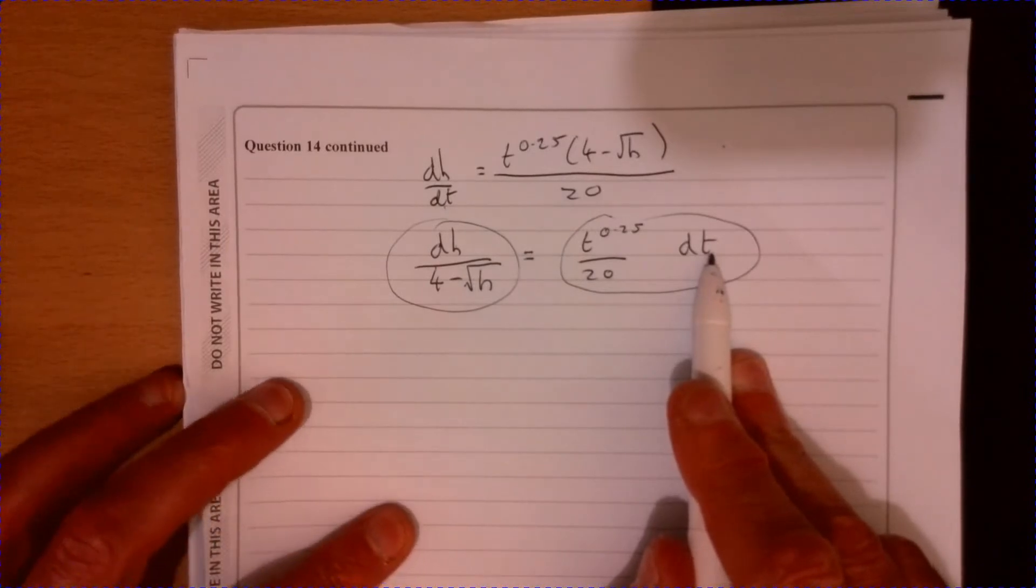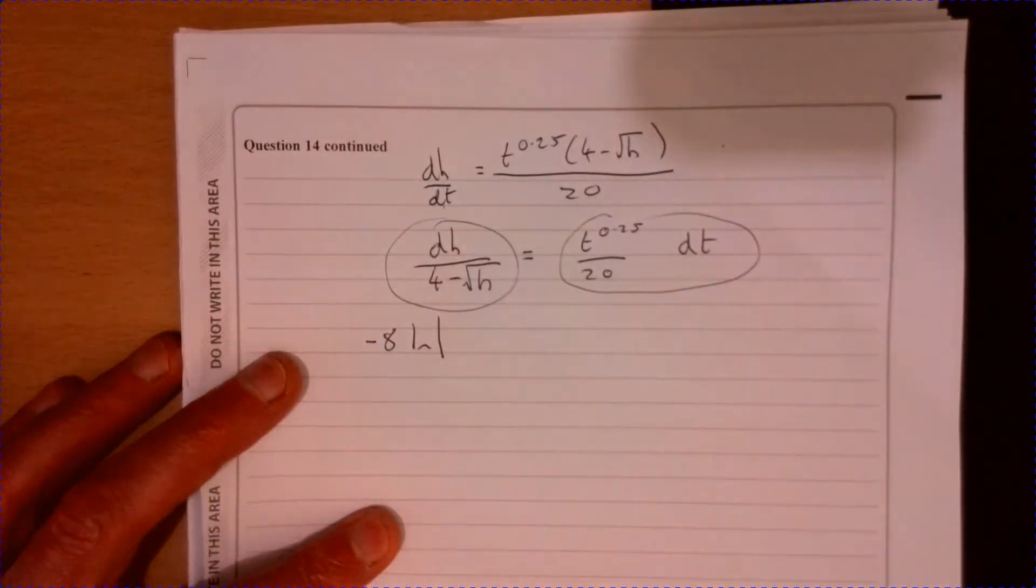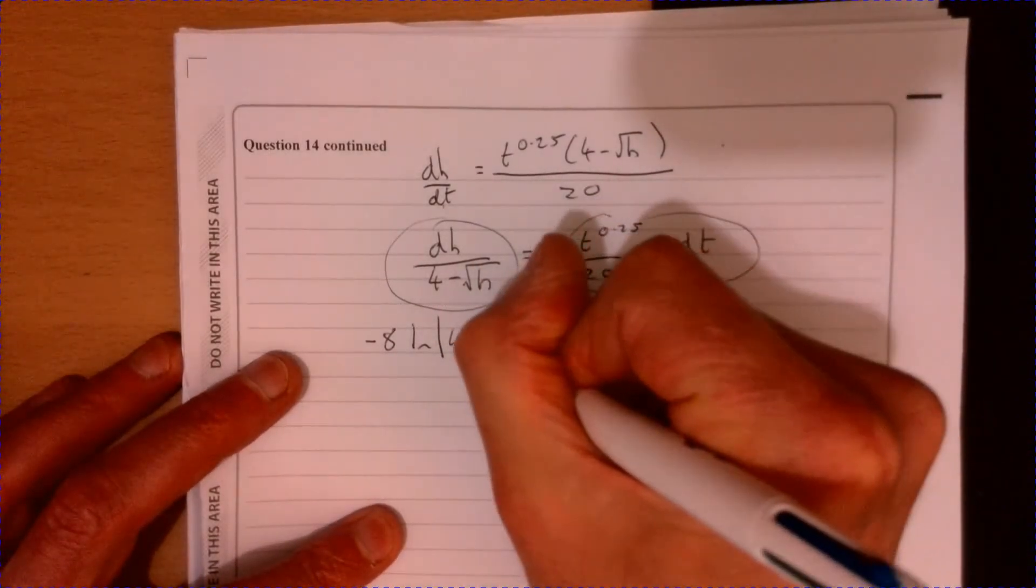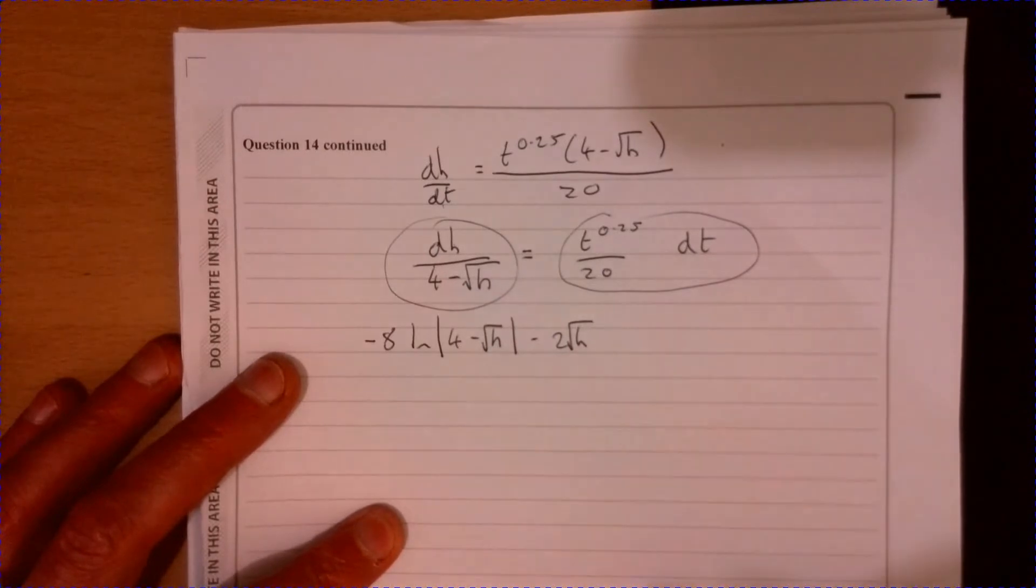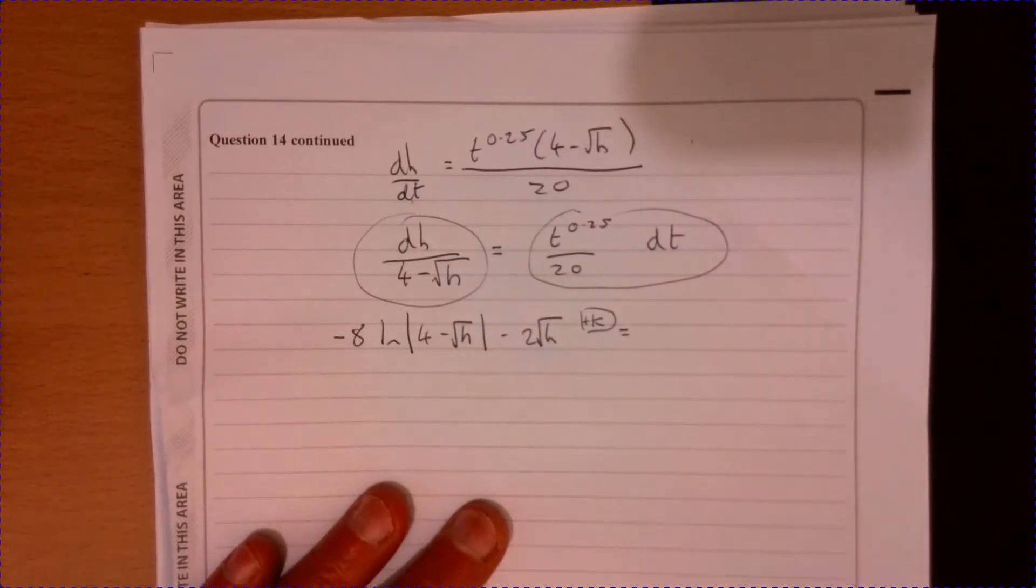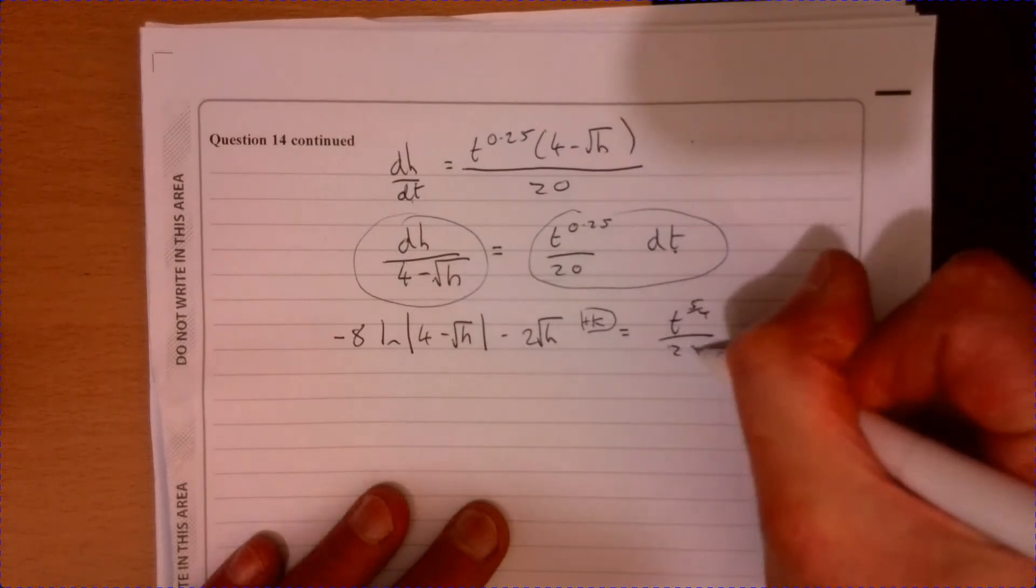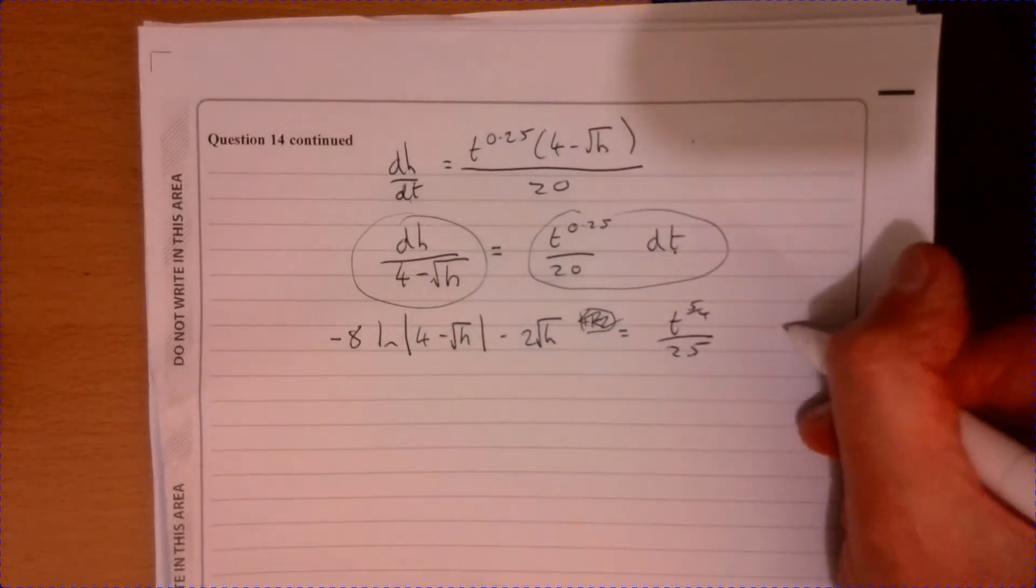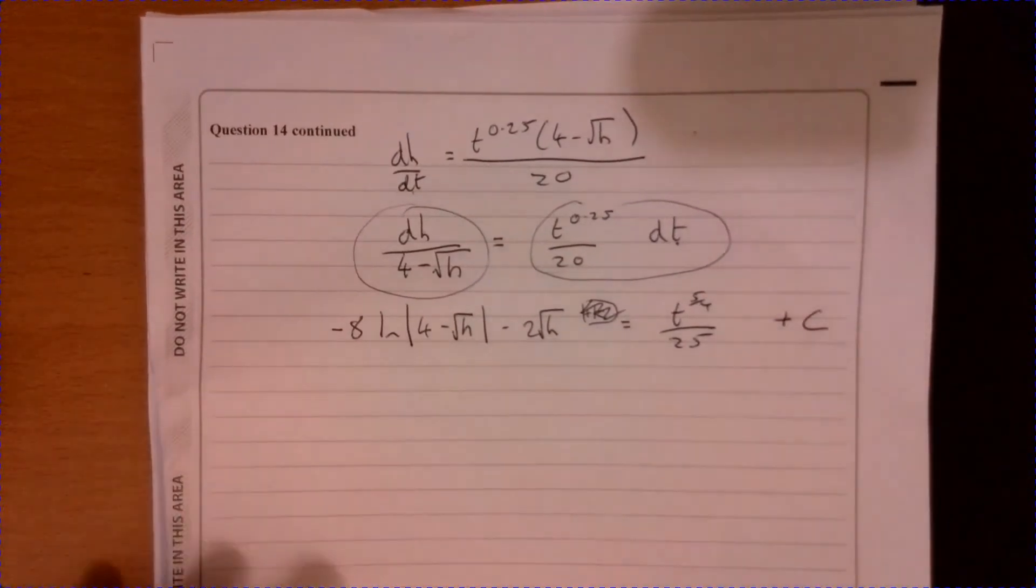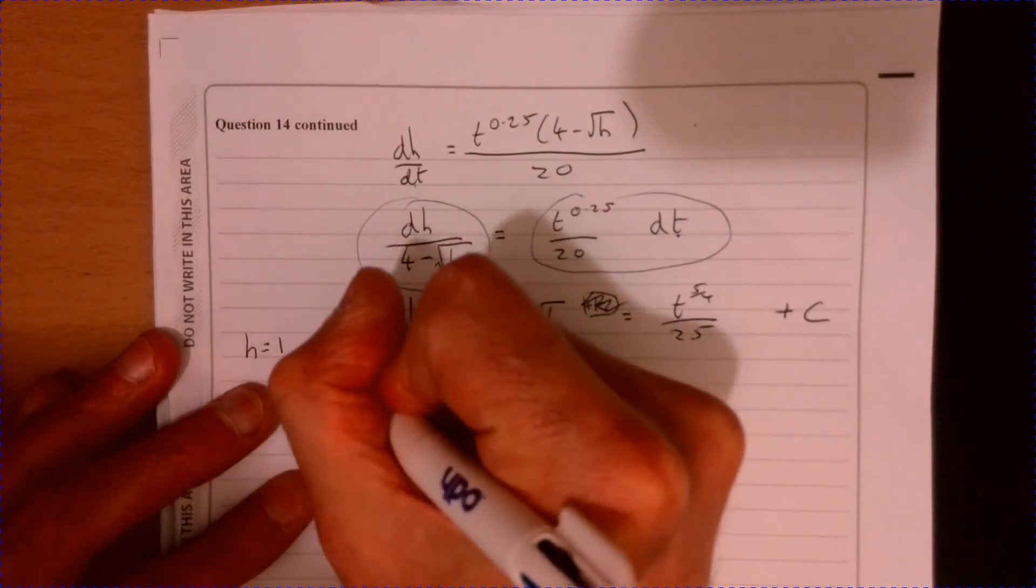Let's write down what we've got. We already know what this is going to be because we've done that previously. So we had minus 8 ln 4 minus root h and minus 2 root h. Now there was also this add k thing, kind of just a constant value. I'm not going to worry too much about that. You'll see why in a second. And if we integrate this with respect to t, that's going to give me t to the 5 over 4 over 25. And that's going to be plus a constant on that side. So instead of having them split on both sides, it's just a constant value. It doesn't really matter what you call it.